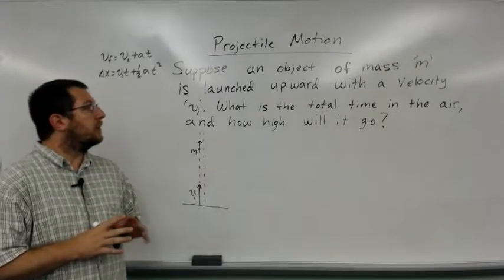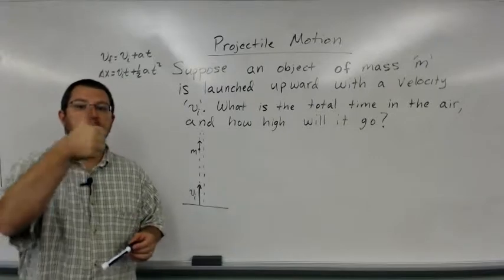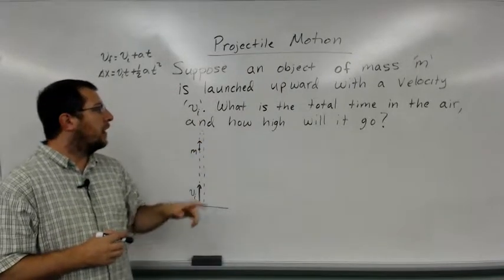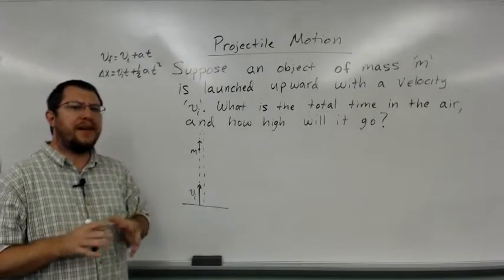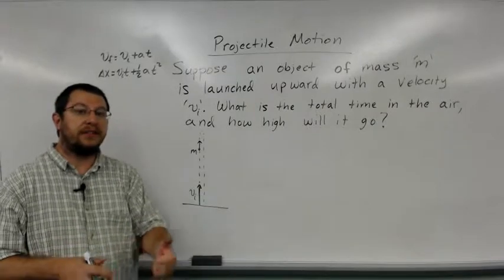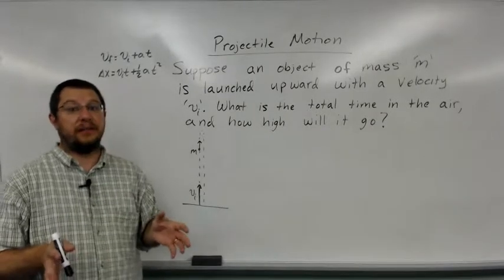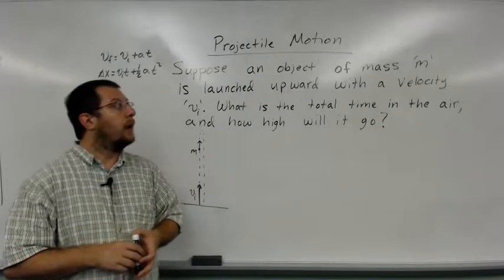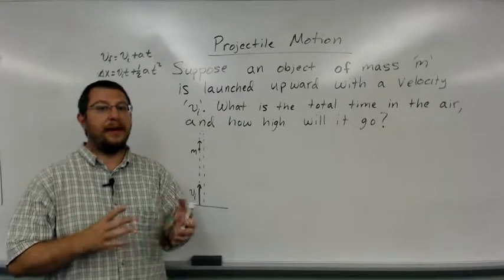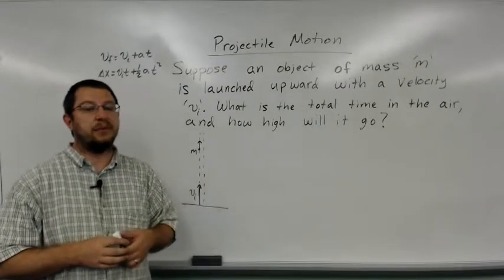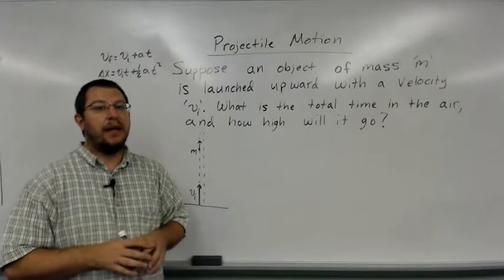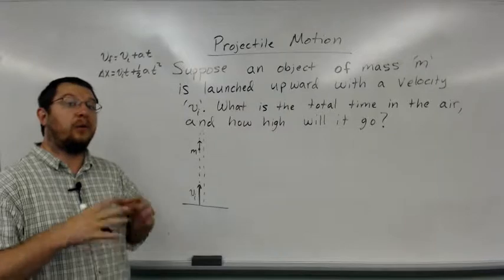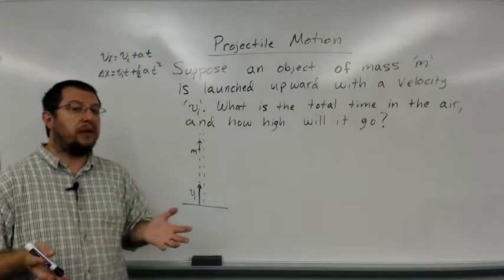So to start we're going to look at this first problem here. We're going to suppose that we launch an object straight up and the object has a mass m and it's launched upward with an initial velocity vi and we want to know two things. These are the two most natural questions to ask if we're given these initial conditions of the speed that it is launched with. Actually, that's really the only piece of information we'll need to know. As we'll see, the mass is actually what we call a red herring. We actually don't need to know anything about the mass.